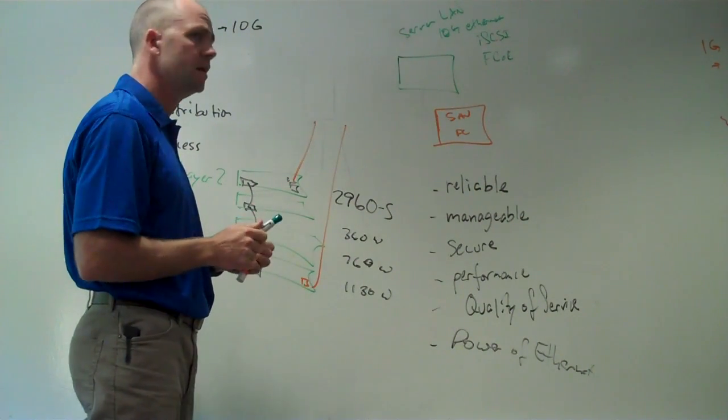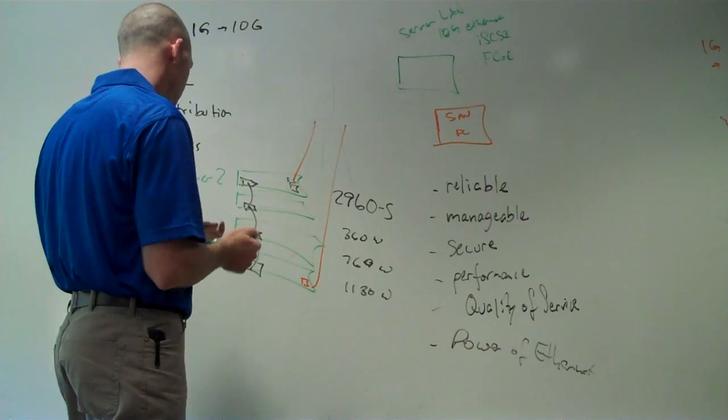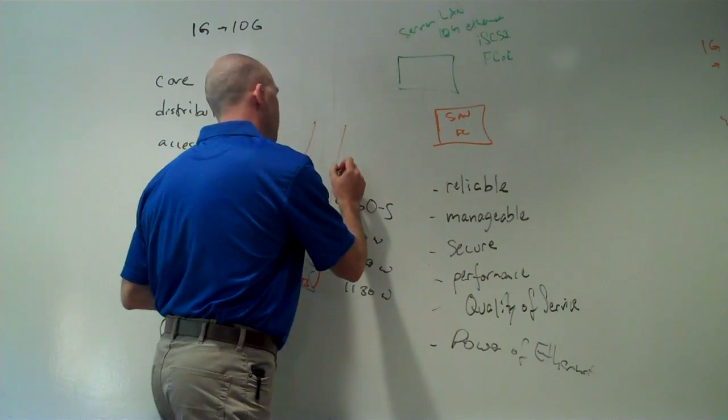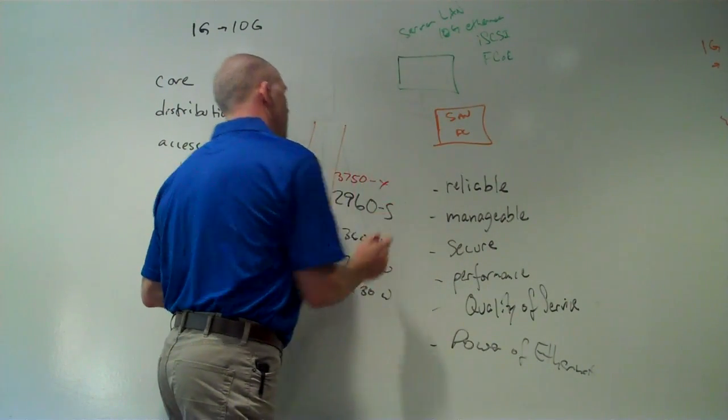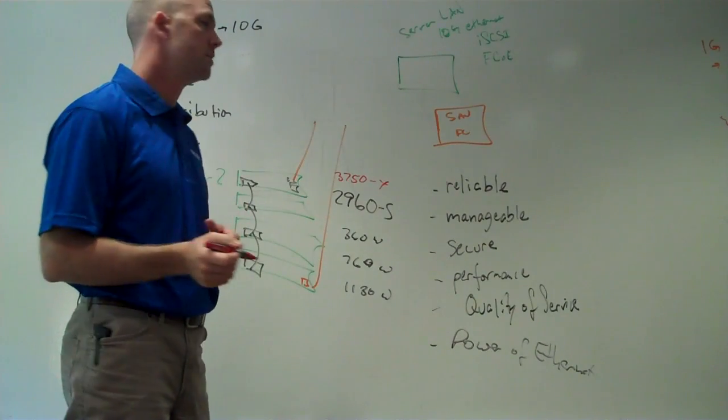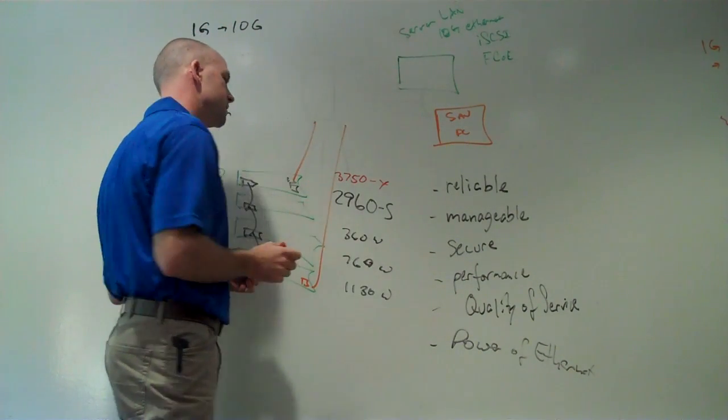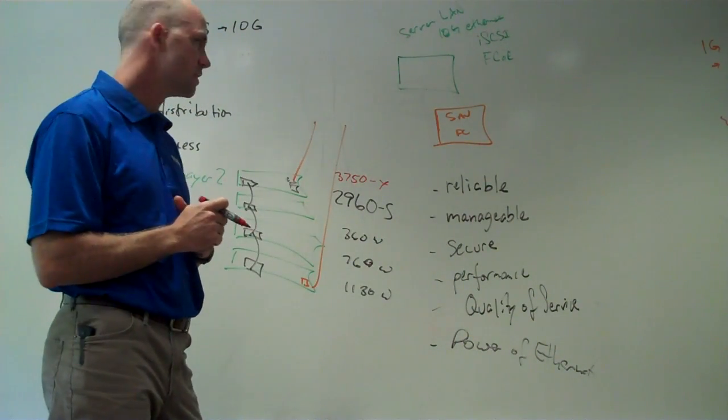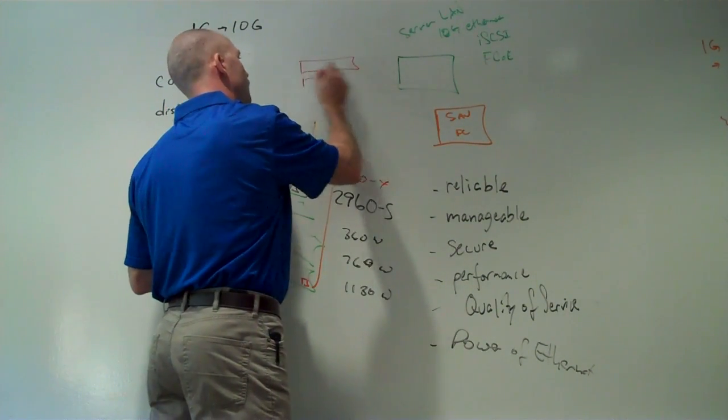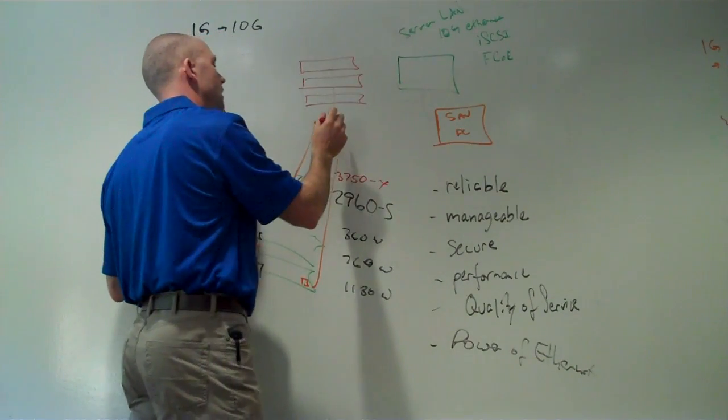Now, an alternative to this in the closet is you can use the 3750X. It's a layer 3 switch. It's a bit more expensive. It has higher performance. In a lot of cases, we really don't design 3750X into the access layer closet. We'll design 3750X if we have a small core distribution capability.